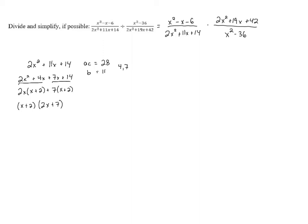We also need to factor 2x squared plus 19x plus 42. We're going to use the same method. In this case, AC is 2 times 42, which is 84, and B is 19. So we're looking for two numbers that have a product of 84 and a sum of 19. And those numbers are 12 and 7. So we can split that middle term up into 12x plus 7x.